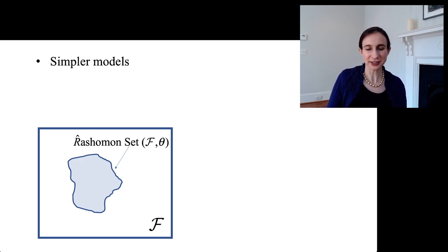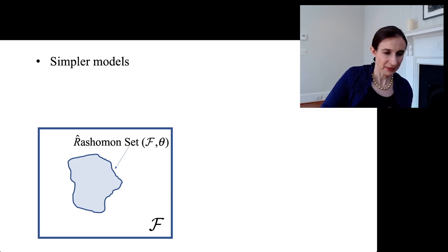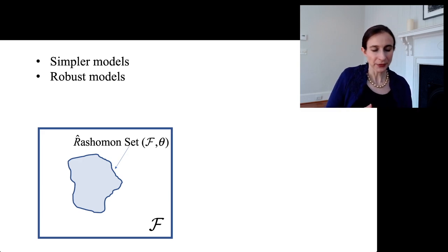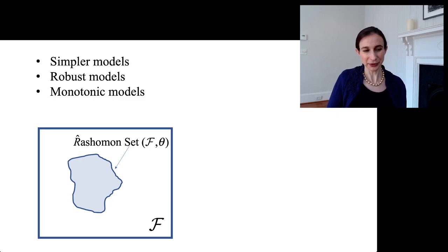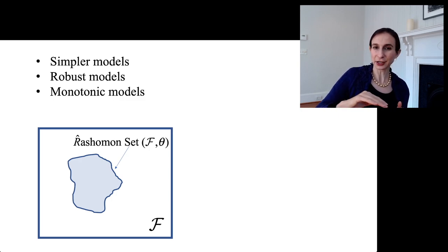Well, first of all, as Lesia says, you might be able to find a simpler model that performs equally well as the more complex models if the Rashomon set is large. Okay, so another thing you might be able to find are models that are robust. So models that are robust under some kind of domain shifts. You could also find models that may obey monotonicity constraints. Like if you want your model to increase along one variable, for instance, you might be able to impose that constraint without losing accuracy.